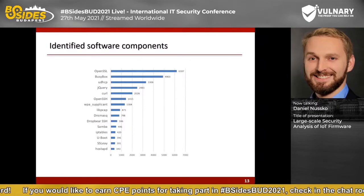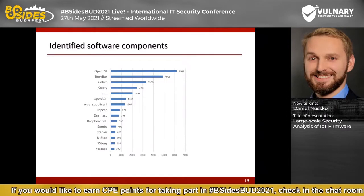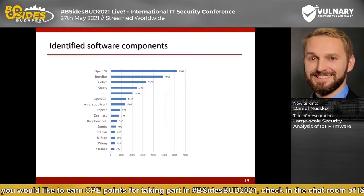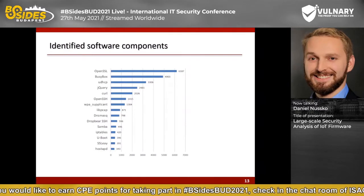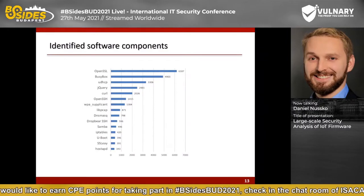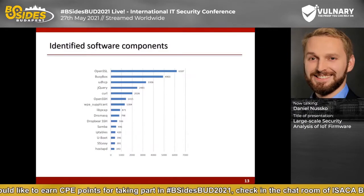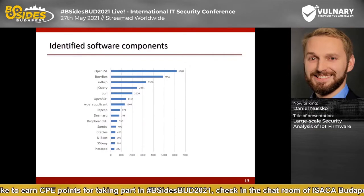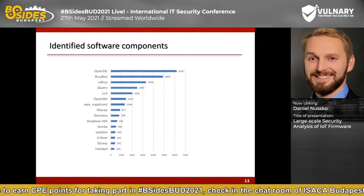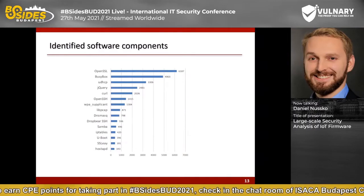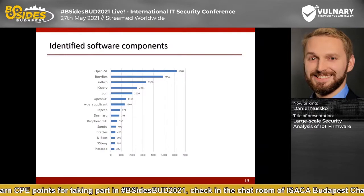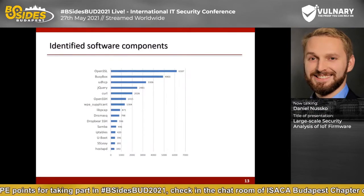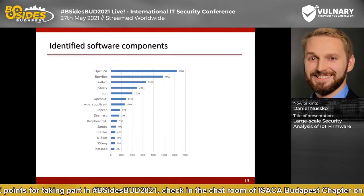This chart illustrates how many times a specific software component was identified across all firmware images. The most commonly identified software component is OpenSSL, followed by BusyBox — very common in embedded Linux as a single executable combining a set of command-line tools. We also see many binaries providing common network services like UDHCP, OpenSSH, DNSMasq, and DropBear SSH. For all these programs, their version was also identified, giving an overview of outdated software component usage.